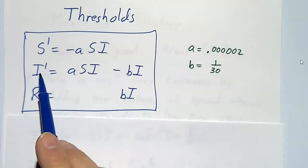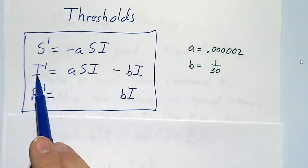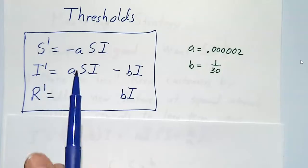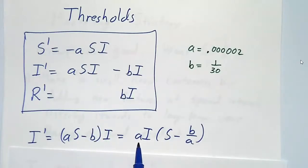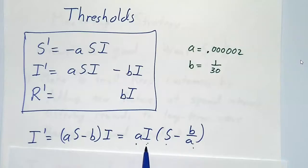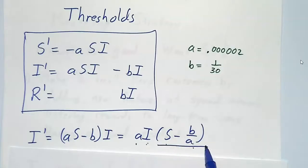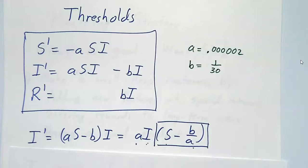If you look at the equation for i, i is going to keep growing as long as i' is positive. And i', you can factor out an i — it's a times s minus b times i, which is a times i times (s minus b over a). Since a is positive and i is positive, the sign of i' is the same as the sign of s minus b over a.